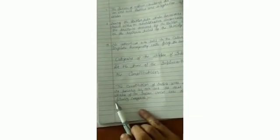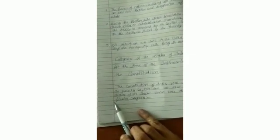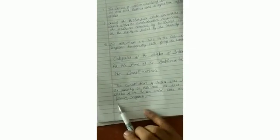Categories of the State of Indian Union. At the time of the implementation of the Constitution of India on January 26, 1950, the states of the Indian Union were divided into following categories. There are four types of states.